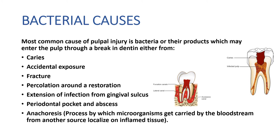Bacteria can also enter via extension of infection from the gingival sulcus, a periodontal pocket or abscess — the endo-perio lesion — or through anachoresis, the process by which microorganisms are carried by the bloodstream from another source and localize on inflamed tissue. These are the various ways bacteria reach the pulp and cause pulpal damage.